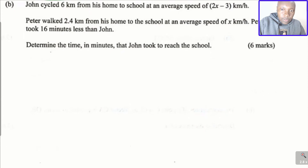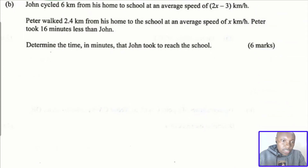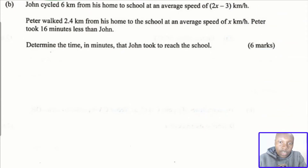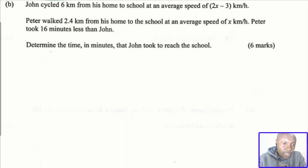Part b: John cycled 6 kilometres from his home to school at an average speed of (2x − 3) kilometres per hour. Peter walked 2.4 kilometres from his home to school at an average speed of x kilometres per hour. Peter took 16 minutes less than John. Determine the time in minutes that John took to reach school.